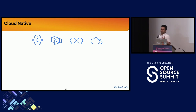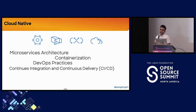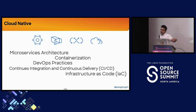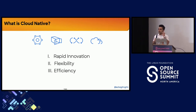Cloud native approaches emphasize the use of microservices architecture, containerization, DevOps practices, CI/CD, and infrastructure as code — along with other cloud native tools and platforms to enable rapid innovation, flexibility, and efficiency. Those are very important qualities that we're going to deliver to our engineering workforce by following the right cloud native principles and practices.